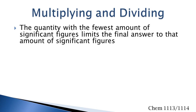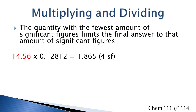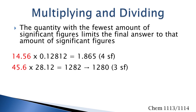In multiplying and dividing, the quantity with the fewest significant figures limits the final answer to that number of significant figures. For example, there are four significant figures in the first number and five in the second, and the final answer will be limited to four significant figures. In the second example, there are three significant figures in the first number and four in the second. When put in the calculator, it comes out to 1282, but limited to three significant figures it becomes 1280. Three significant figures — do not put a decimal point there, as that would make it four.